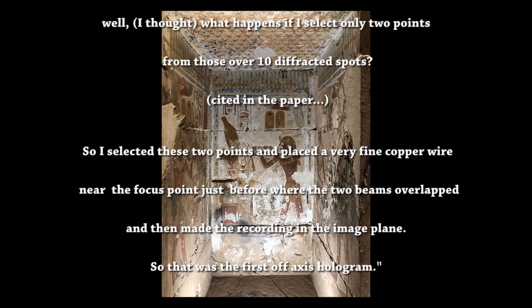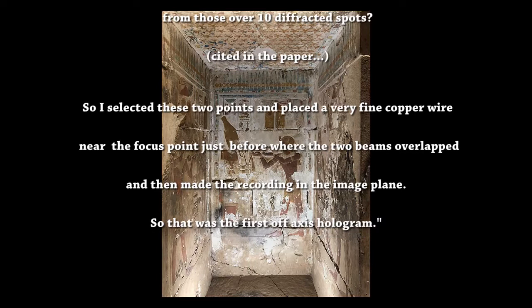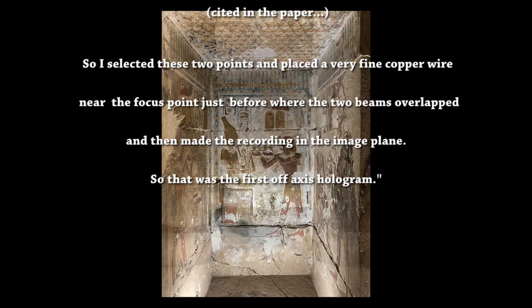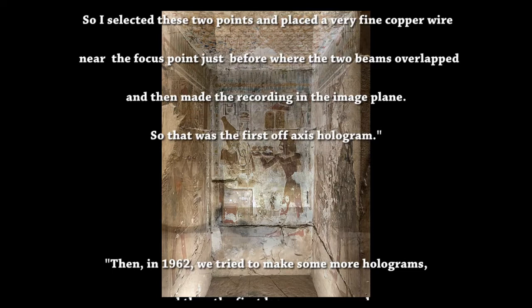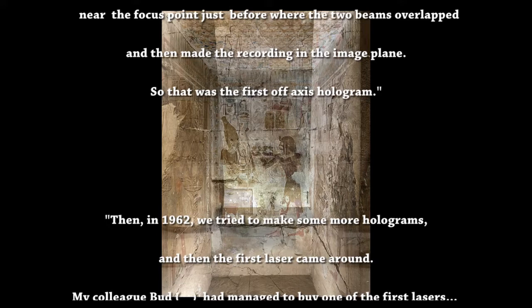So then I selected these two points and placed a very fine copper wire near the focus point, just where the two beams overlapped before, and then made a recording in the image plane. So that was the first off-axis hologram.